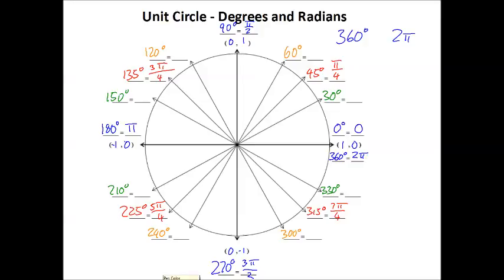Now we're going to divide 2π by 12, just like we did for the 360 degrees. 2π over 12 is π/6 — that's going to be our smallest measurement. 30 degrees is the same as π/6. Adding another π/6 gives us 2π/6, or just π/3. Adding another π/6 gives us 3π/6, or just π/2. Adding another gives us 4π/6, which is the same as 2π/3. Adding another gives us 5π/6, and another gives us 6π/6, which is π.